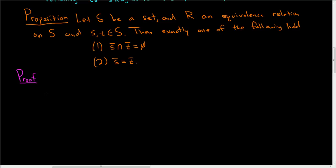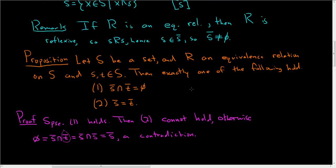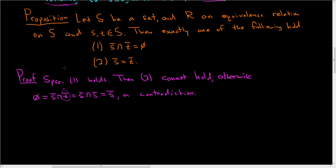For the proof, we start by supposing that (1) holds and show it's impossible for (2) to hold. Suppose (1) holds — then (2) cannot hold. By contradiction: if (2) did hold, then by hypothesis the empty set equals the intersection of the equivalence classes, and if (2) holds, the equivalence class of t equals the equivalence class of s. Replacing, that intersection becomes just the equivalence class of s — which is a contradiction, since r is an equivalence relation, so by reflexivity the equivalence classes are all non-empty.